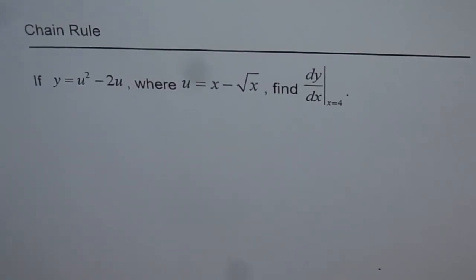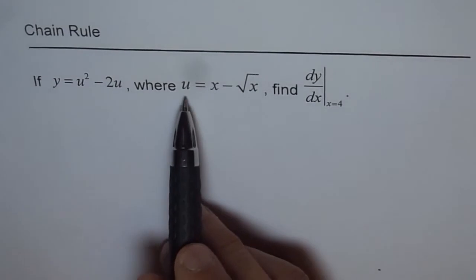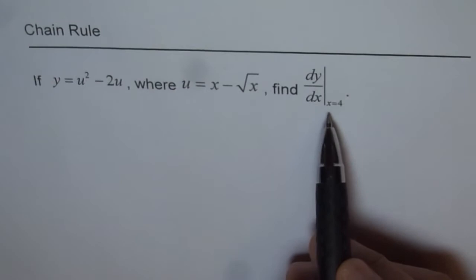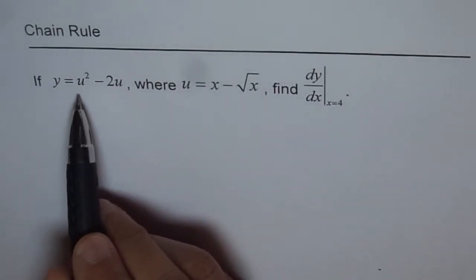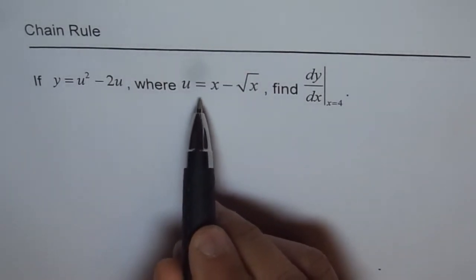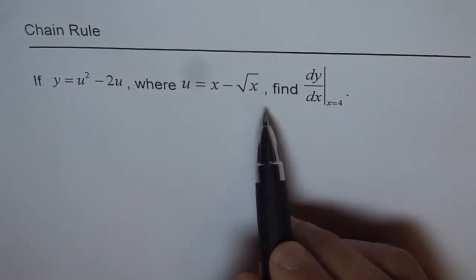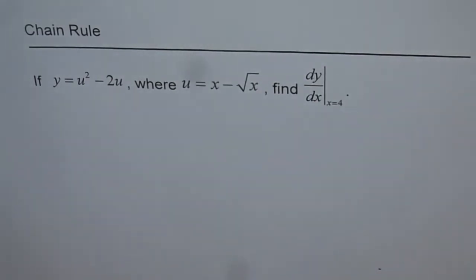Now we will try to understand the chain rule and how to evaluate the derivative of a function at a particular point. We are given two functions: y as a function of u, and u as a function of x, and we need to find dy/dx at x equals 4. Given y equals u squared minus 2u, where u equals x minus the square root of x.